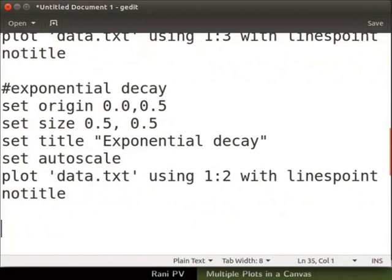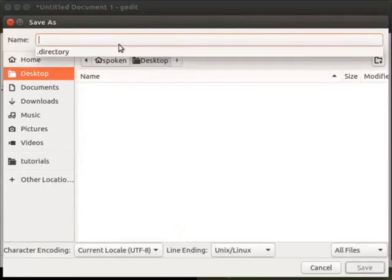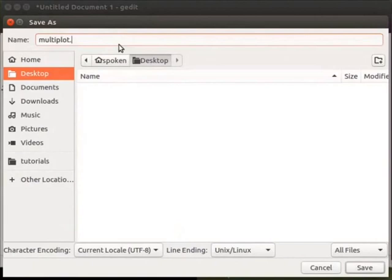Finally unset the multiplot mode with the command unset space multiplot. Press ctrl s to open the file save as dialog box. Save the file in desktop directory with the file name multiplot.dem. Click on save to save the script.